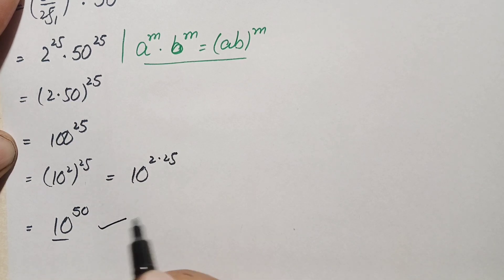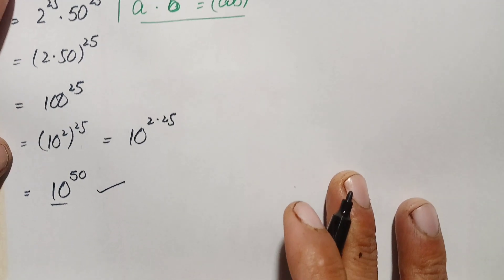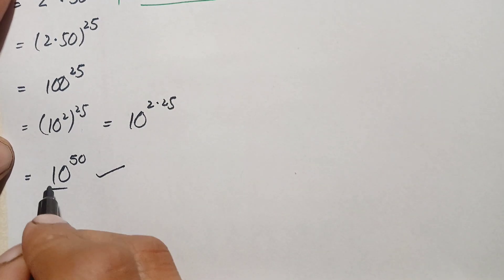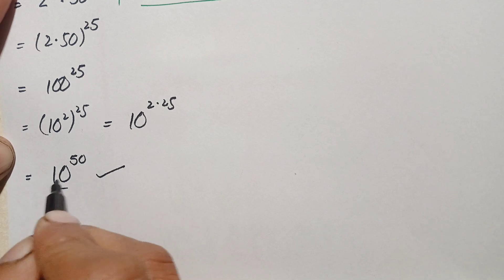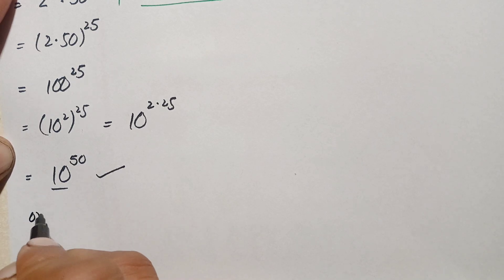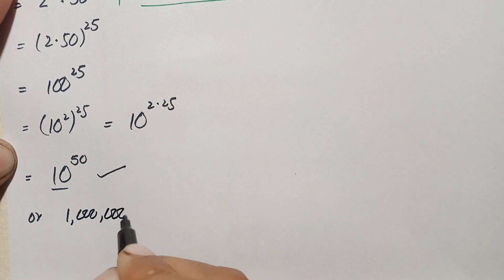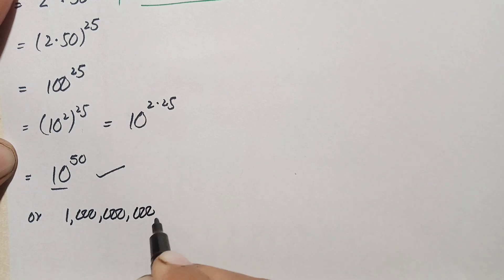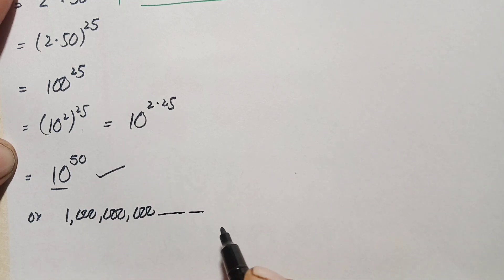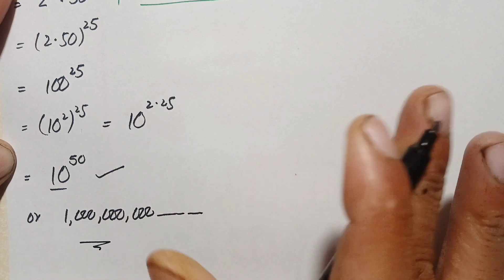So 10 raised to power 50 is our answer. This means there is a 1 followed by 50 zeros — a very large number that we cannot fully write out here. That is our answer for the first method.